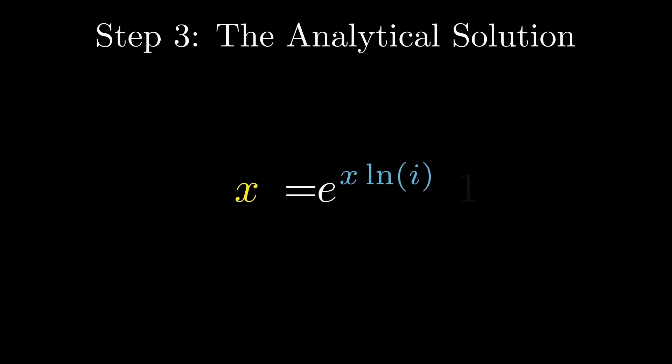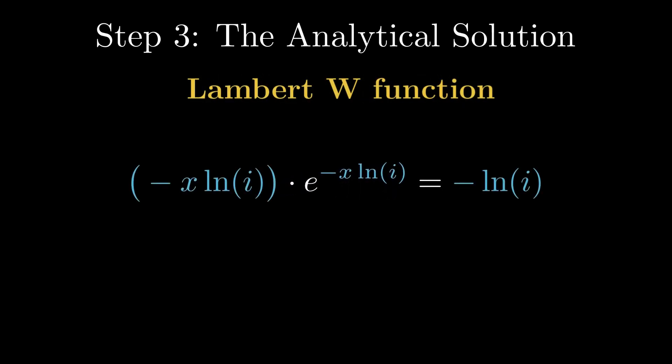Now we rearrange the terms. Multiply both sides by E to the power minus X times the natural log of i. This produces a very special structure: a quantity multiplied by its own exponential. This type of equation is called a Lambert equation.